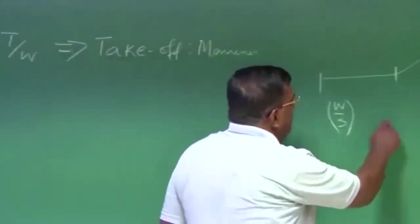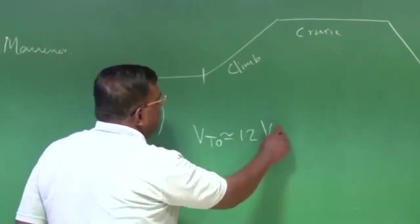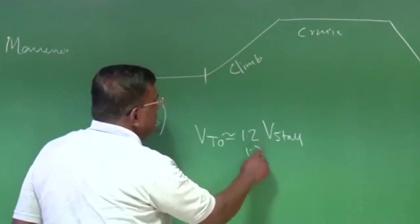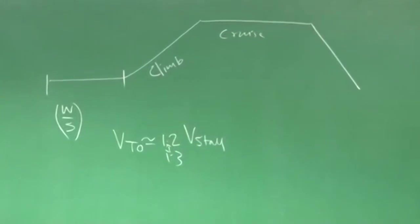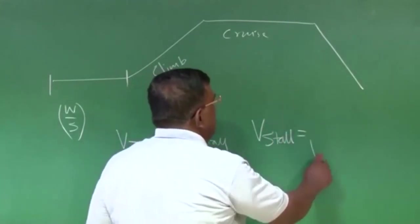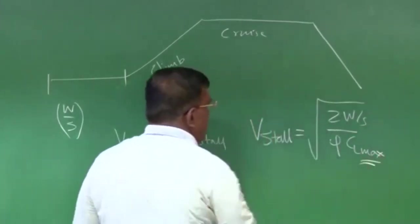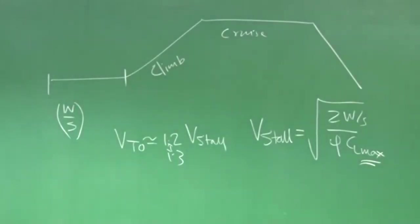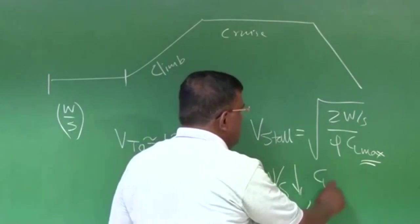You also know that when I talk about V takeoff, this is some percentage of V stall, could be some percentage, 20% or 30% more than V stall. And to ensure that V takeoff is less, we try to see that V stall is less. V stall is again 2W/S times rho CL max, and to reduce V stall we have two options: one is reduce the wing loading or increase CL max.